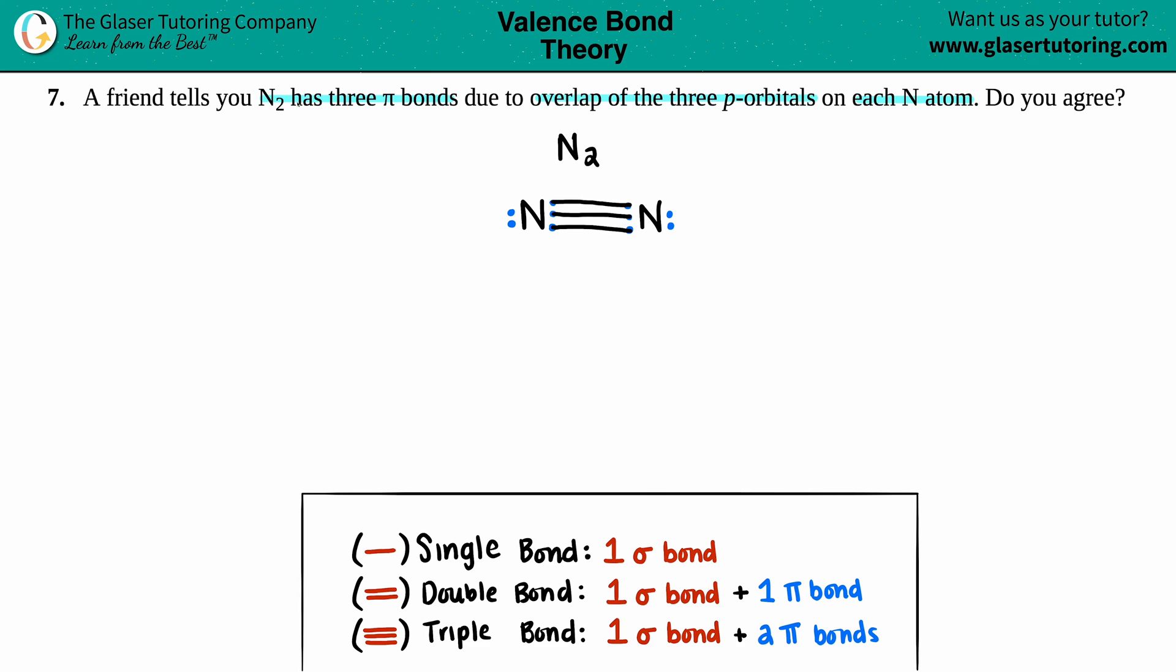So does a triple bond have three pi orbitals? A triple bond—this is the information that you have to know—a triple bond always equals one sigma bond and two pi bonds. Right? So that's the total of three. One plus two is a total of three bonds.